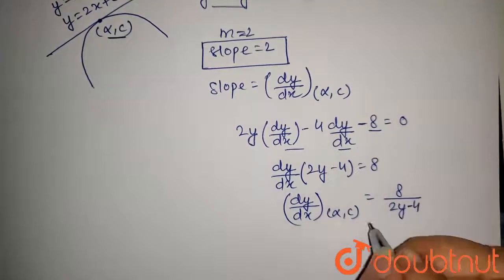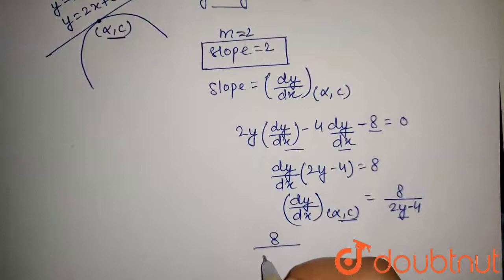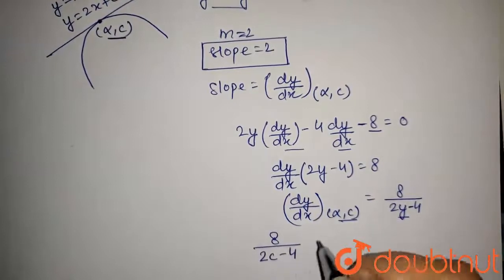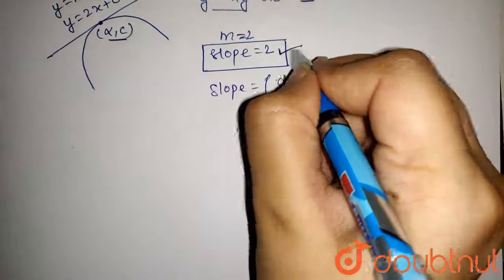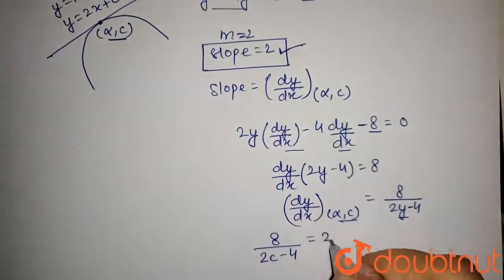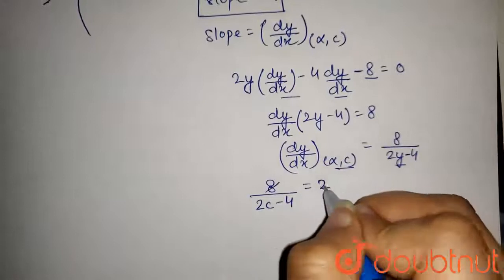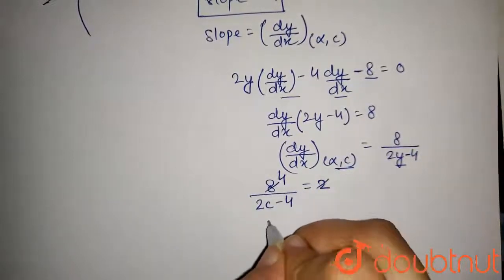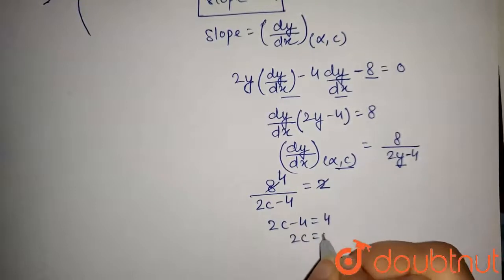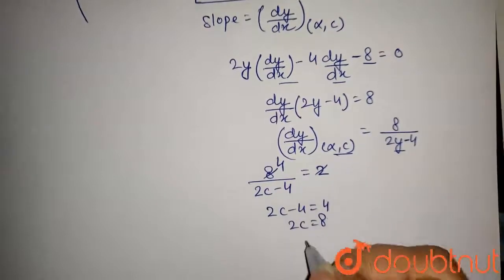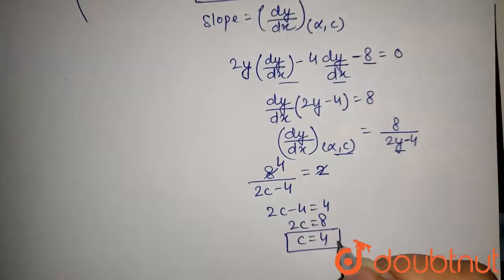Putting this point in, we get the slope = 8 / (2c - 4). We have slope equal to 2, so setting 8 / (2c - 4) = 2, we get 2c - 4 = 4, so 2c = 8, giving c = 4. So c = 4 is the value of c.